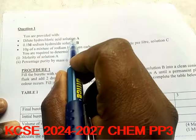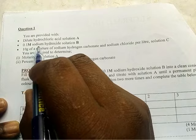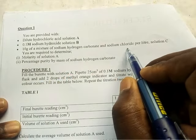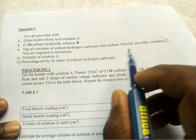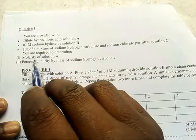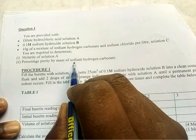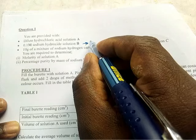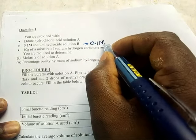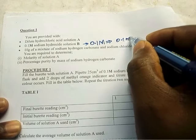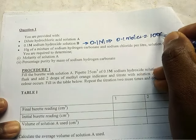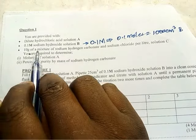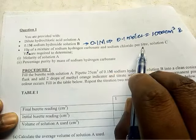You are provided with dilute hydrochloric acid solution A, a 0.1 molar sodium hydroxide solution B, and 10 grams of a mixture of sodium hydrogen carbonate and sodium chloride per liter as solution C. You are required to determine the molarity of A and the percentage purity by mass of sodium hydrogen carbonate. Note that 0.1 molar means 0.1 moles in 1000 cm³, and the mixture is 10 grams in one liter.